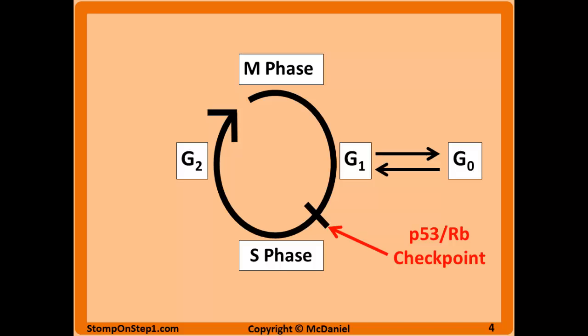One of the most popular checkpoints discussed in medicine is the P53RB checkpoint. Cells are supposed to stop at this point if something is wrong with their DNA. The cell knows it's a bad egg — it's supposed to stop replicating and may undergo apoptosis, or self-destruction. It also has the option of going back into the cell cycle if it's able to be repaired. Cancers ignore this checkpoint and keep dividing.